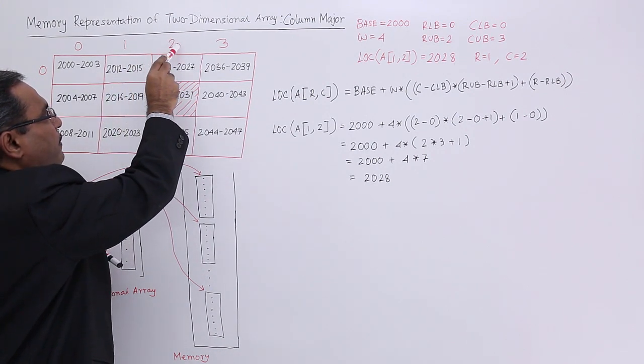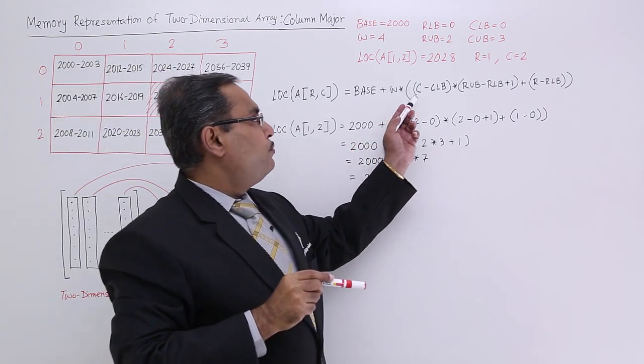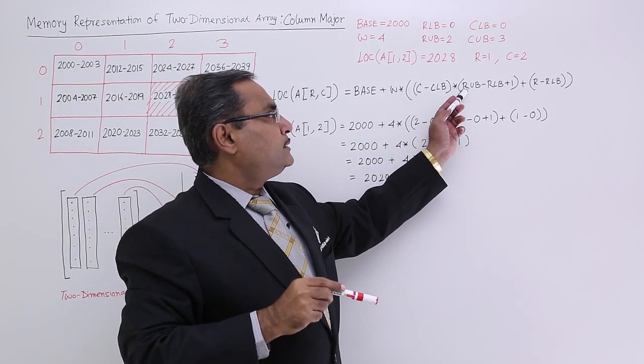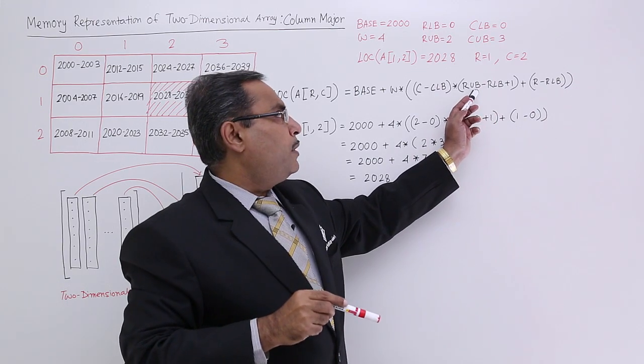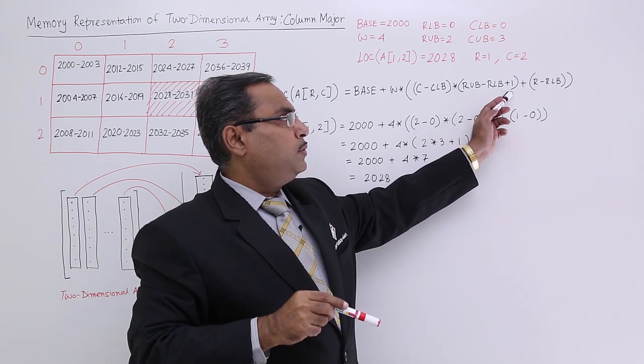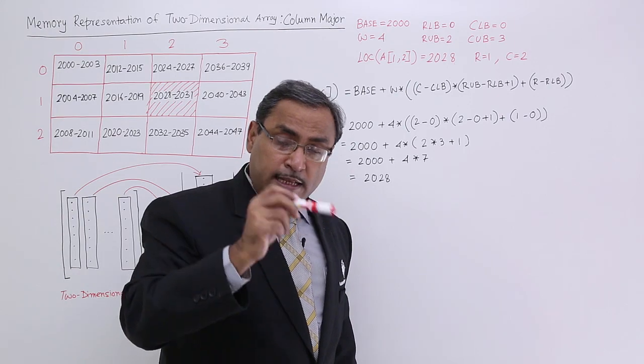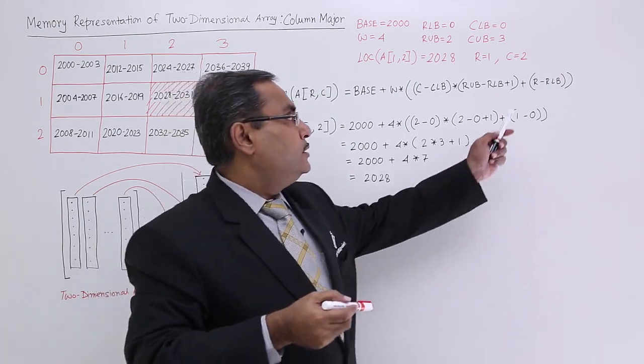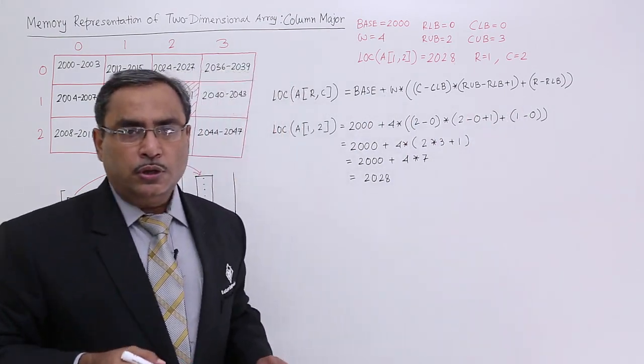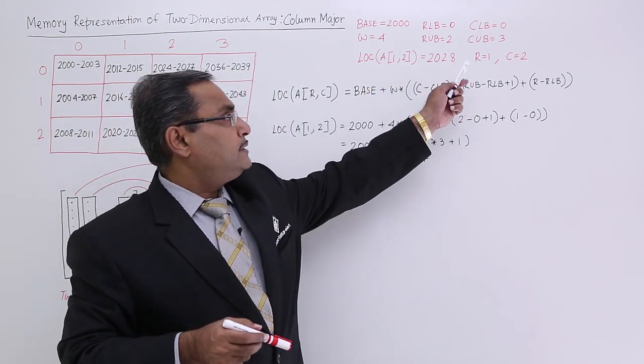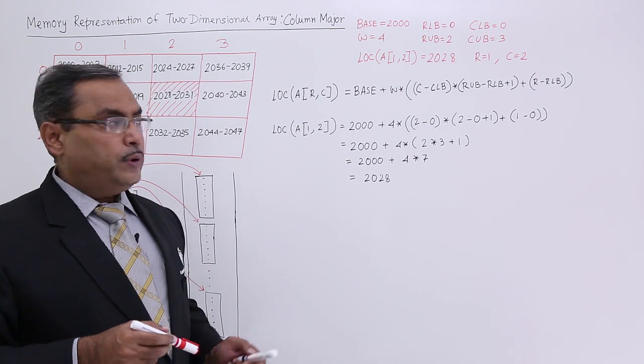For two, I shall go for two minus column lower bound plus how many rows are there per column? That is rows upper bound minus rows lower bound plus 1 plus for the cth column, how many rows inside? That is row minus rows lower bound. So in this way, if you just put these values, for this particular case, you will be getting 2028.